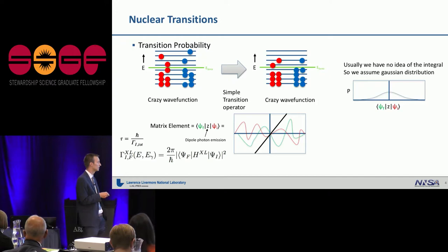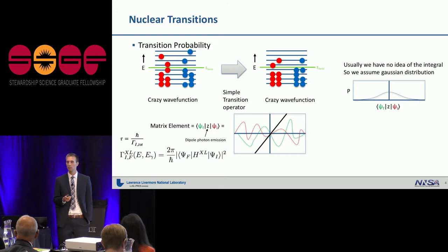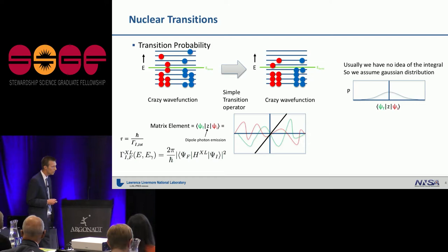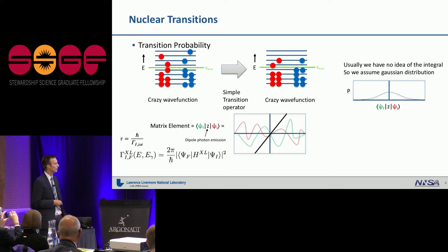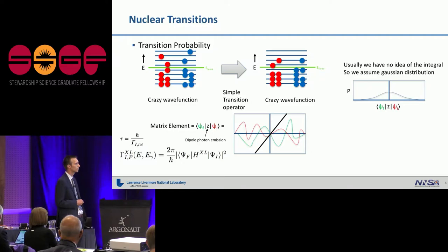Now, usually we have no idea what this integral is because nuclei are chaos. The strong force is very complicated. We can't write it down. We can't write down the potential for the strong force. So, we assume that this integral is just a Gaussian distribution. This goes into averaging the properties of nuclear matter. We can't know every single wave function of every single state when we want to think about things like a reactor. It's just too much physics to put into one simulation code. So, we have to make simplifying assumptions.